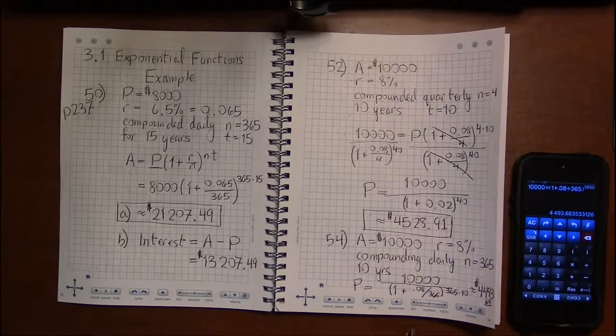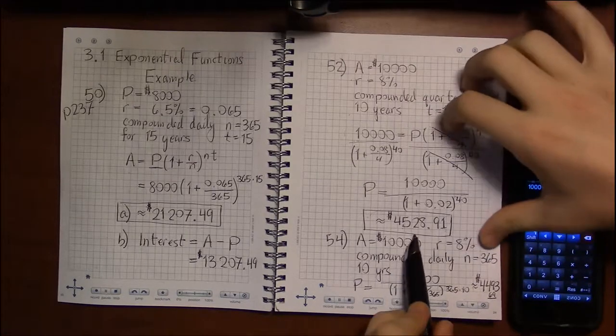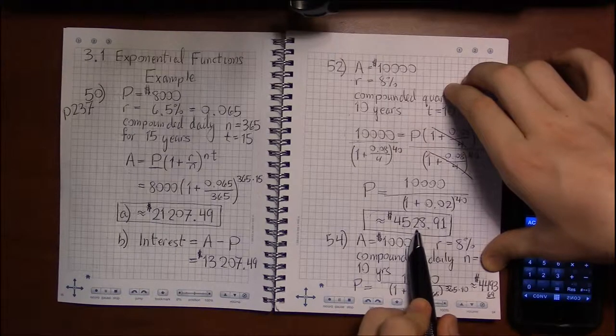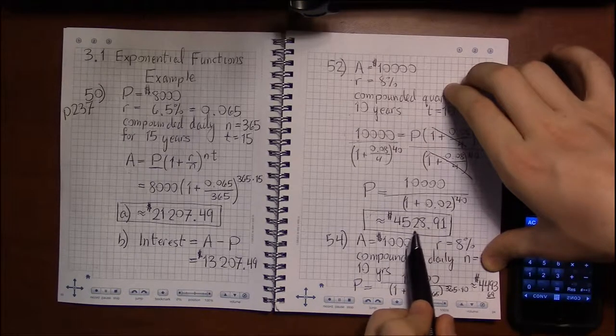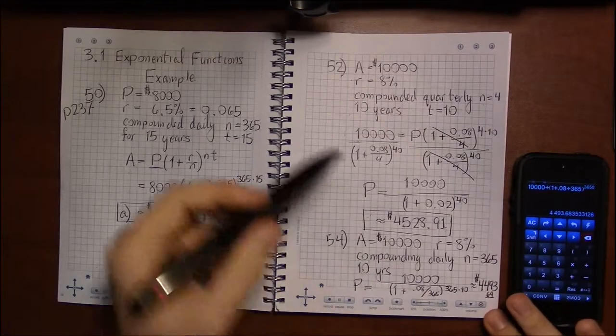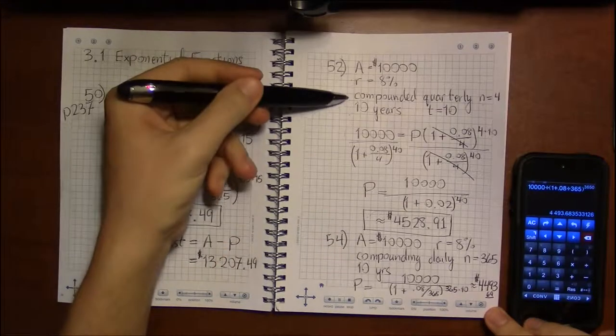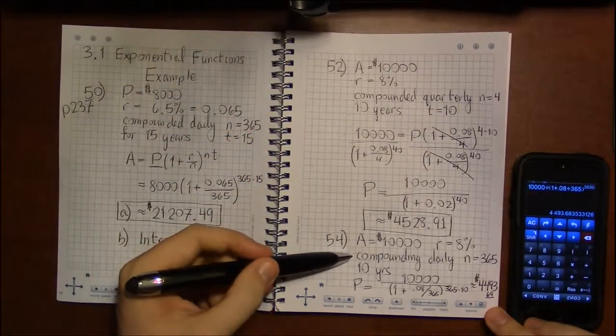So that's not a great deal of a difference. That's probably something like something around $25 difference that compounding more frequently gave.